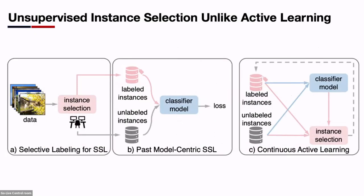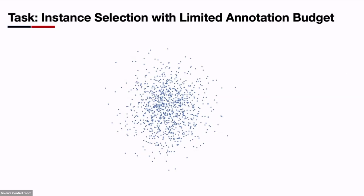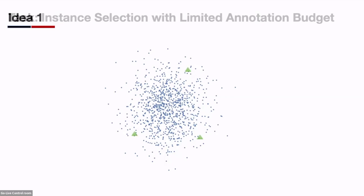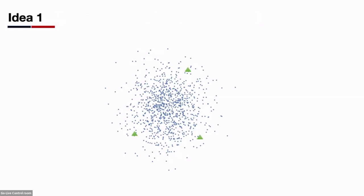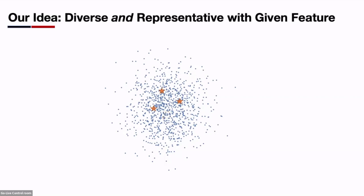However, previous model-centric SSL methods assume that labeled and unlabeled data are given, focusing on finding the right model architecture and training recipe while neglecting the data aspect. In contrast, we design an unsupervised data-centric method that selects the optimal subset of unlabeled data for annotation within a given annotation budget. Our task, Unsupervised Selective Labeling (USL), is completely unsupervised unlike active learning, which begins from labels of random samples. This makes our method much more label-efficient since we have no wasted annotation on randomly selected samples. Good selections should be both diverse and representative — outliers are not representative enough, and selections lacking coverage don't have enough diversity.